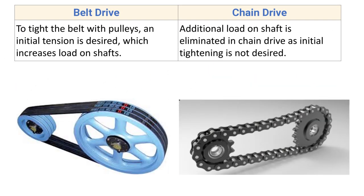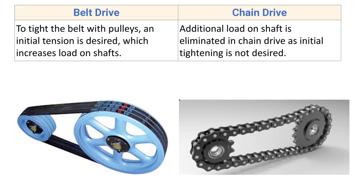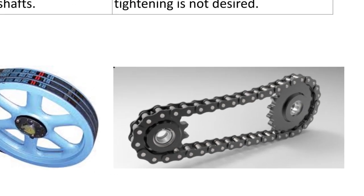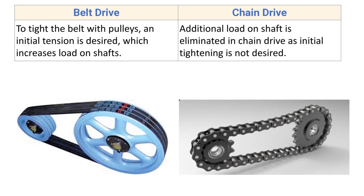To engage the belt with the pulley, an initial tension is required in belt drive, which increases the load on the shaft. This initial tension must be maintained and adjusted as the belt length changes with load variation. In chain drive, additional load on the shaft is eliminated because initial tightening is not required, so there is no issue of initial tensioning.